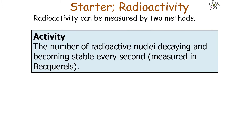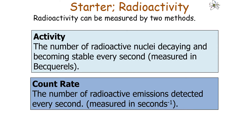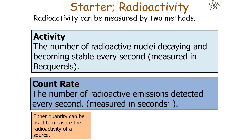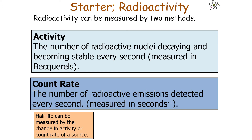Activity is the number of radioactive nuclei decaying and becoming stable every second, measured in Becquerels. Count rate is the number of radioactive emissions detected every second, measured in per second. Each quantity can be used to measure the radioactivity of a source, and half-life can be measured in either the change in activity or the change in count rate.